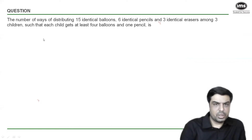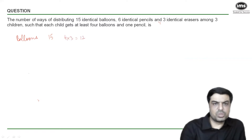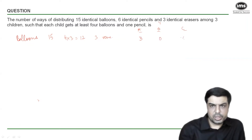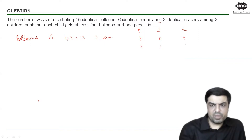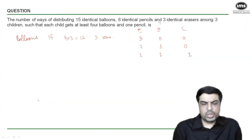The first way we are going to solve this is by listing the cases. For balloons: we have 15 identical balloons and three children. We've already given at least four to each child — four times three equals 12 balloons already distributed — so three balloons remain. The possible distributions among children A, B, C are: give all three to one child (3-0-0), give two to one and one to another (2-1-0), or give one each to all three (1-1-1).